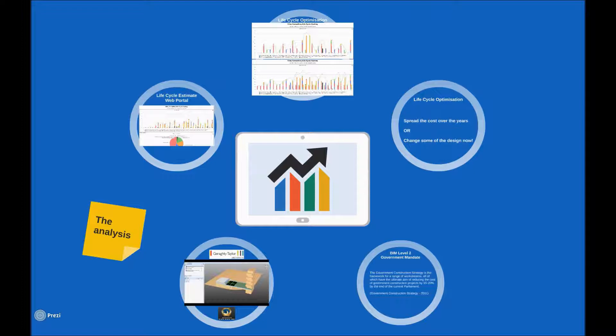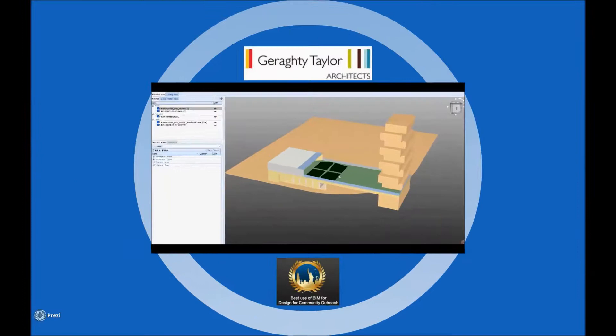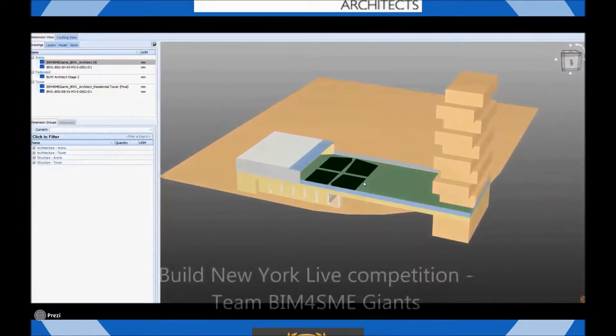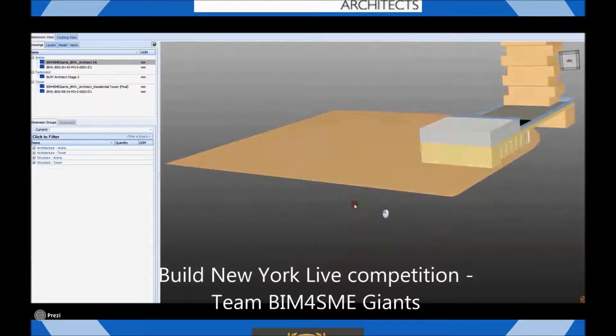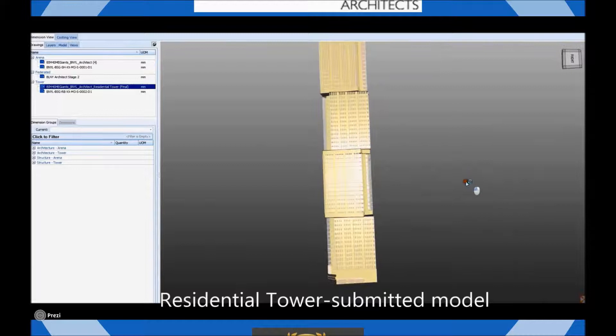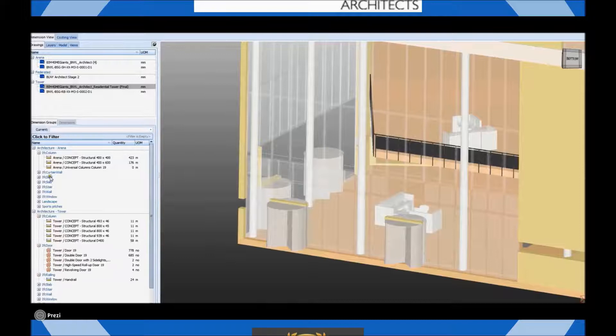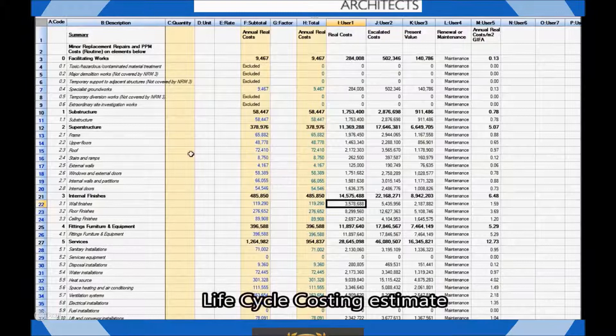Now to finally move on to what we are actually able to achieve after this long introduction. This is a short video featuring a model from Garrity Taylor Architects that was created during the 48-hour BIM competition called Building New York Live. What we have here is the first building that was designed — the Sports Arena — and the second building, the residential tower. As you can see on the bottom left side, we have the quantities extracted from the models using the model map technique demonstrated previously by Joe.